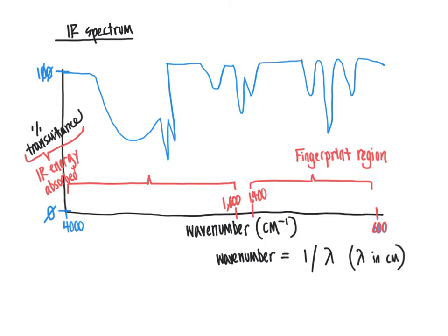This region from 1600 onward is the region that is most diagnostic of specific functional groups. So I'm going to label this as diagnostic of specific functional groups. Generally what IR is useful for is identifying what specific functional groups are present within a molecule.